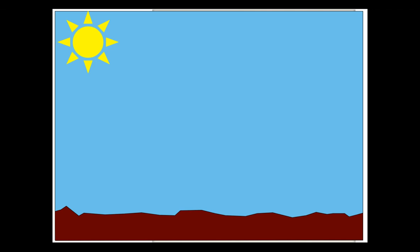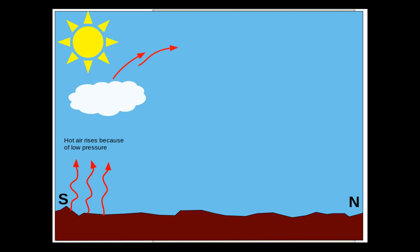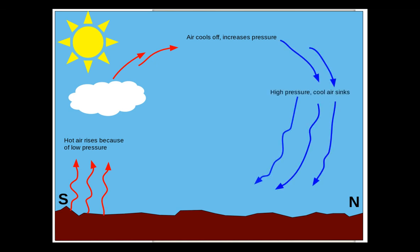With unequal heating — warm to the south and cool to the north — air warms faster in the south because sunlight is more direct. Warm air has less pressure and it will rise. Once air is aloft, it will begin to cool. Cool air has more pressure, so the higher-pressure cool air will sink. Once this high-pressure cool air reaches the surface, friction causes it to move towards the low-pressure warm air.